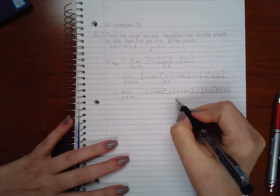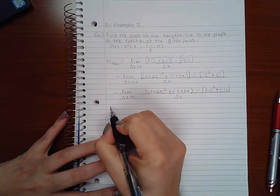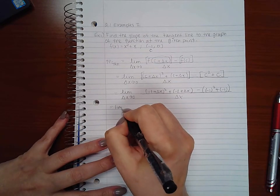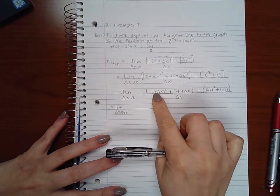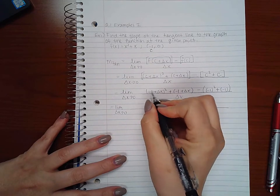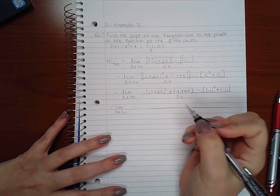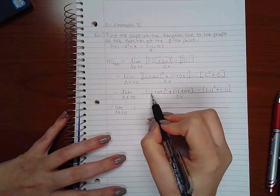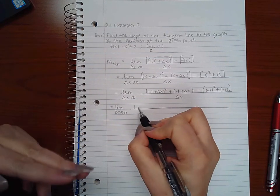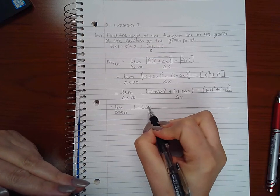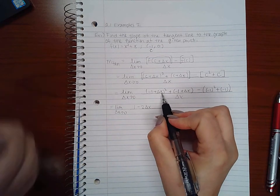So we need to simplify this a lot. So if I square this, I'm going to get negative one times negative one which is positive one, and then negative one times delta x double that, so negative delta x doubled would be negative two delta x, and then delta x squared is going to be delta x squared.